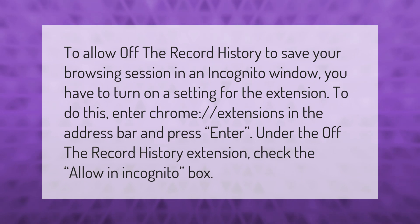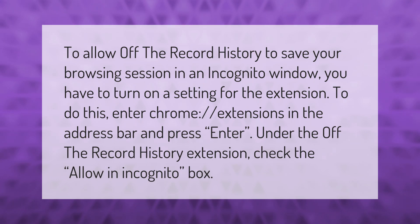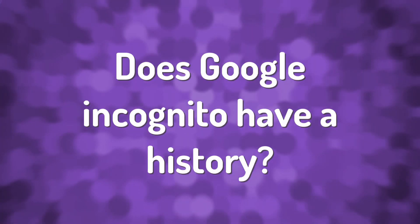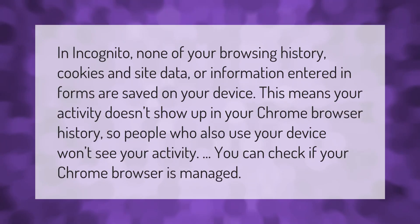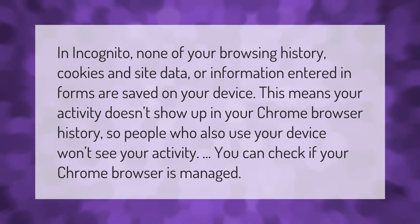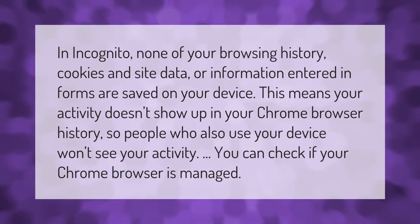Under the Off The Record History extension, check the 'Allow in Incognito' box. In incognito, none of your browsing history, cookies, site data, or information entered in forms are saved on your device. This means your activity doesn't show up in your Chrome browser history, so people who also use your device won't see your activity.